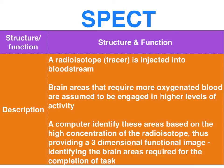It's important to emphasize that the SPECT provides not only structural information but also functional information by using a radioisotope as a tracer. This is injected into the bloodstream so that when the patient is performing a cognitive task, the brain areas that require more oxygenated blood are assumed to be engaged in higher levels of cognitive activity. The computer identifies these areas based on the high concentration of the radioisotope, providing a 3D functional image identifying the actual brain areas required in the completion of a cognitive task such as speech.